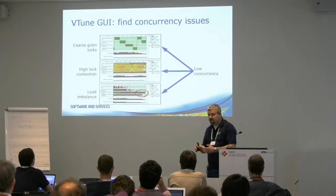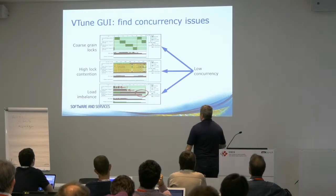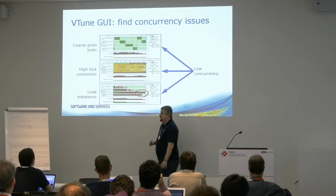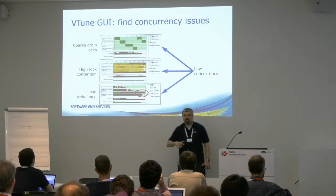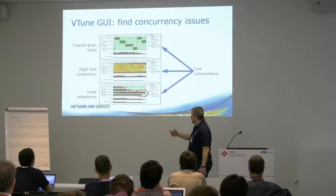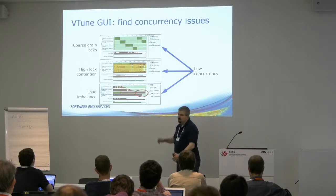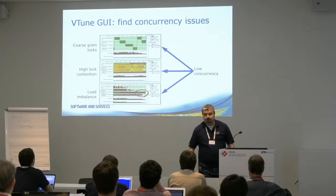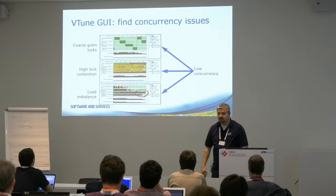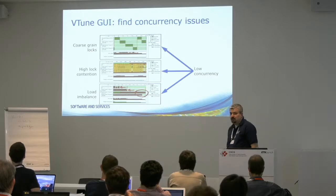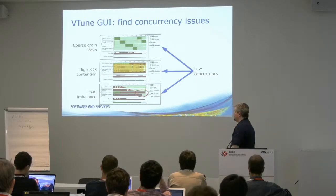Here you see a lock that is highly contentious where people are really contending on the lock usage. Then in the timeline you can also see something like a load imbalance where some of the threads finish early and start waiting while other threads are either computing more slowly or have more work to do. You can use VTune to find out if this thread here is very busy because it has a lot of work, or if it's just a straggler thread working on remote memory and therefore is slower.